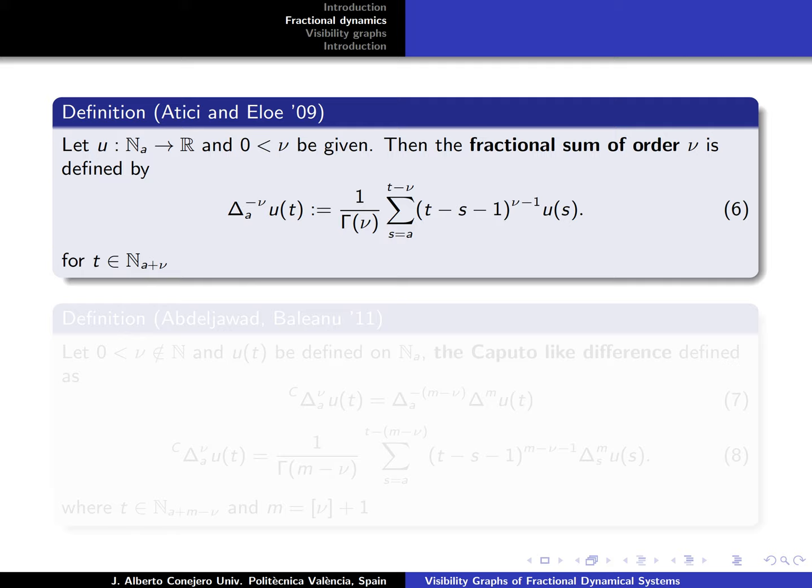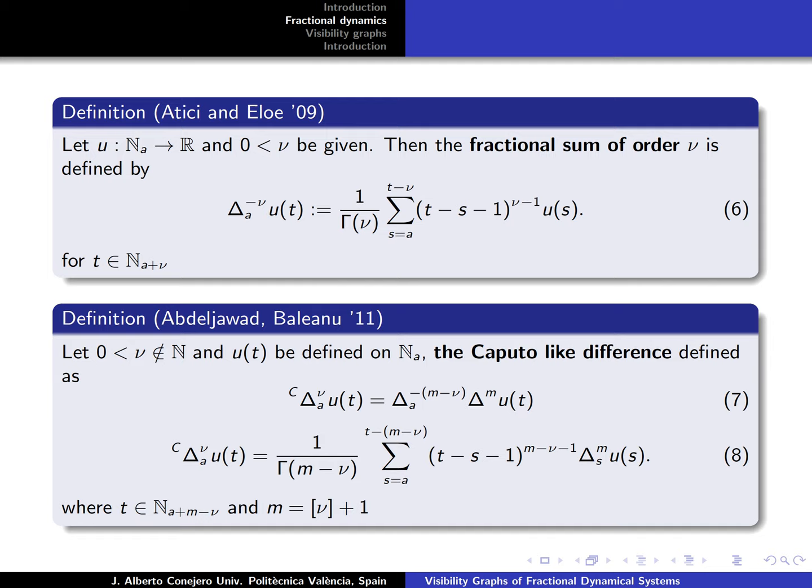Atıcı and Eloe show that the fractional sum of order ν can be defined as indicated in equation 6, and here if u is defined on ℕ_a, we can compute these fractional sums for t in ℕ_{a+ν}. This result permits us to study the Caputo difference defined as we have in equation 7, where we have the fractional sum of order m minus ν, and later the m power of difference operator. In this case we have the expression in equation 8 that provides an expression for the Caputo derivative of u at point a with scaling factor ν.